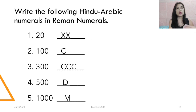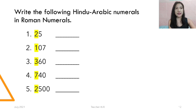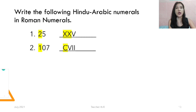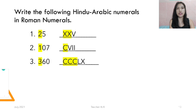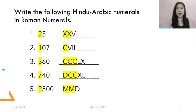Let's proceed to the next drill. Write the following Hindu-Arabic numerals in Roman numeral: 25, 107, 360, 740, and 2,500. The answers: 25 is XXV (XX is 20, V is 5). 107 is CVII (C is 100, VII is 7). 360 is CCCLX (CCC is 300, LX is 60). 740 is DCCXL (DCC is 700, XL is 40). 2,500 is MMD (MM is 2,000, D is 500).